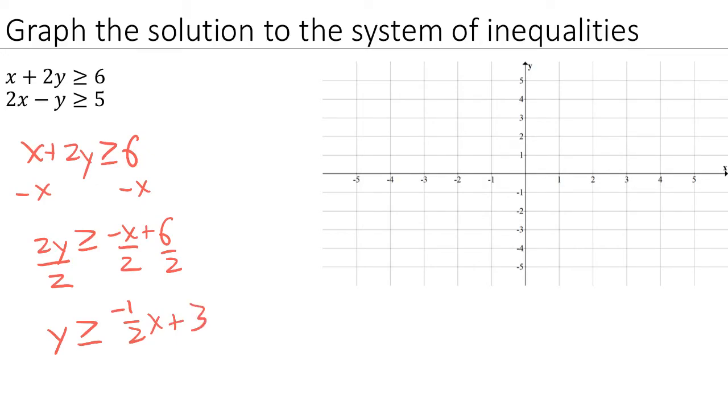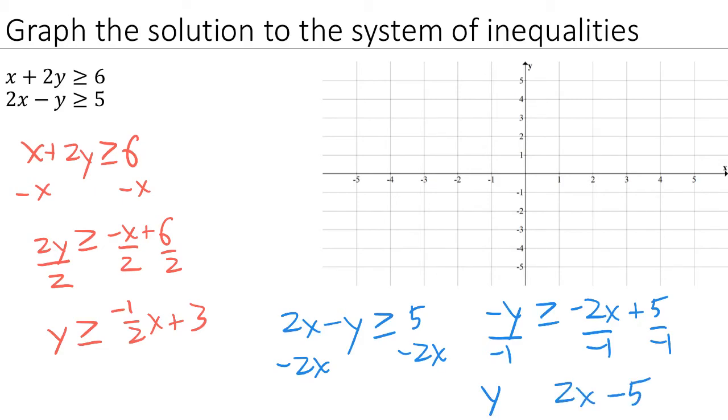Now let's do the same thing with the second inequality. 2x minus y greater than or equal to 5. We can start by subtracting 2x from both sides, which leaves us with negative y greater than or equal to negative 2x plus 5. Now we'll divide both sides by negative 1. On the left we get y. On the right we get 2x minus 5. And because we've divided by a negative, the inequality symbol flips around, and now we have less than or equal to.